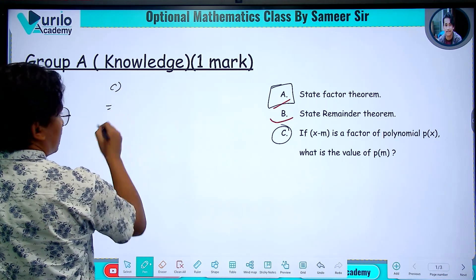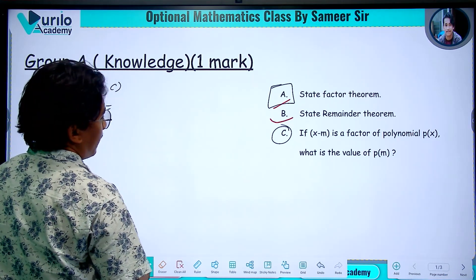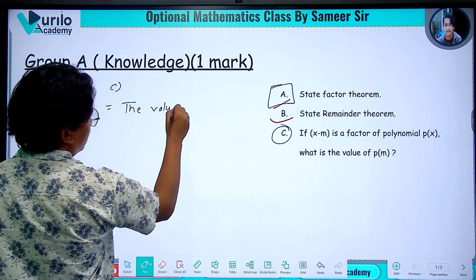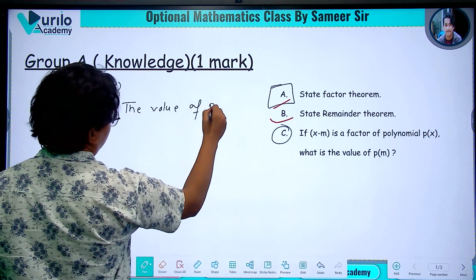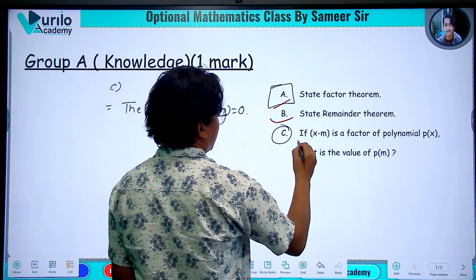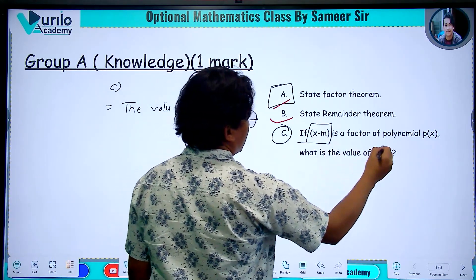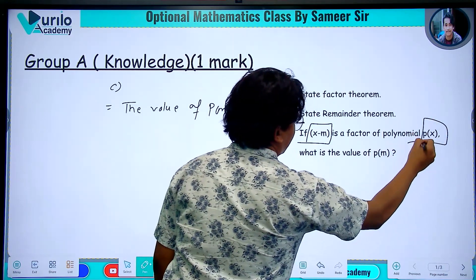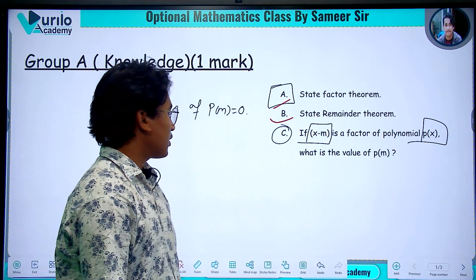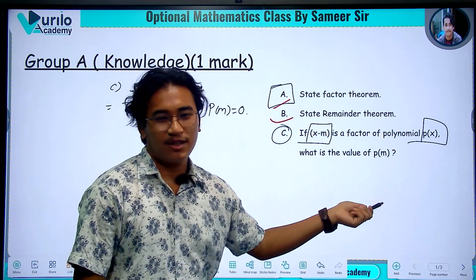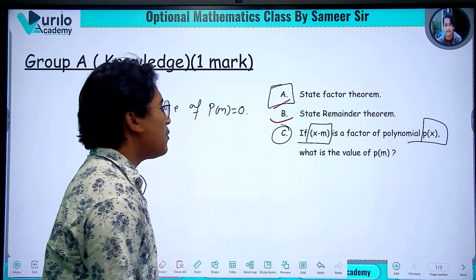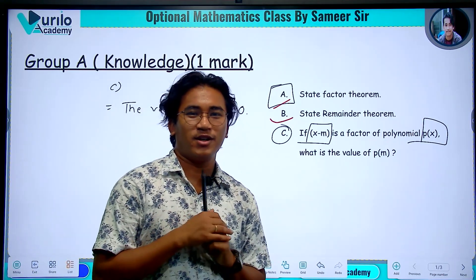The value of p of m is equal to 0. Why? Because x minus m is a factor of polynomial p(x). So if x minus m is a factor, then p of m is equal to 0. Of course, if p(x) equals zero, then this is a factor.